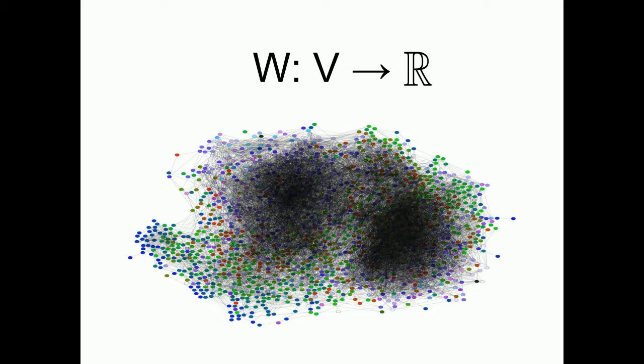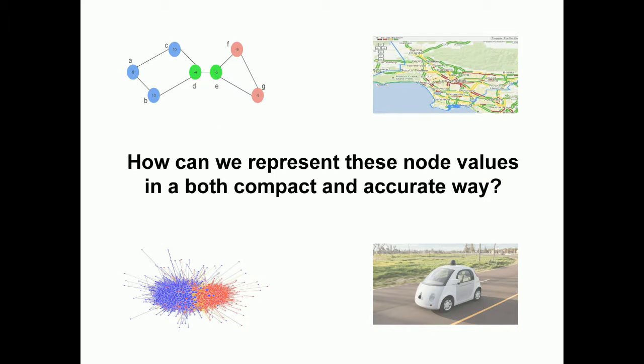We see this node information as a real function that maps each vertex in the graph to a real value. The main question in this paper is, how can you represent these values in a both accurate and compact way?